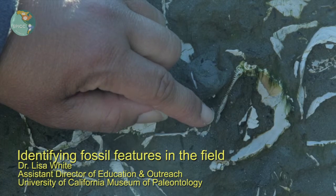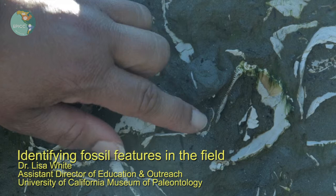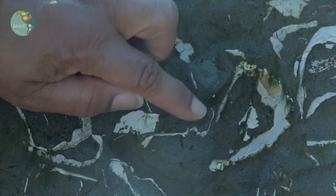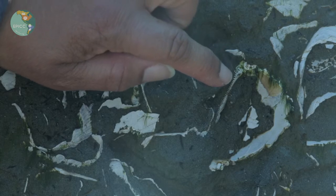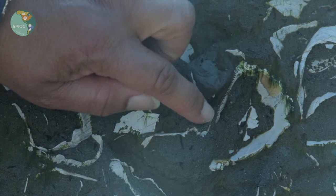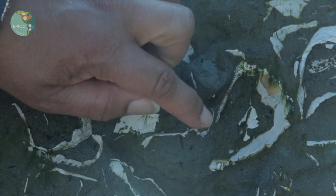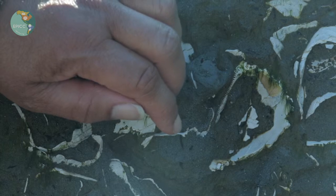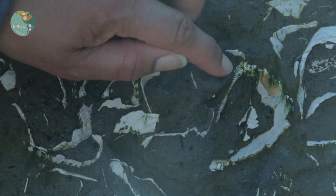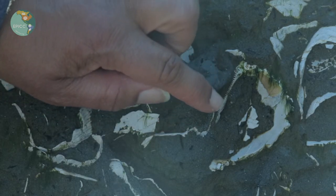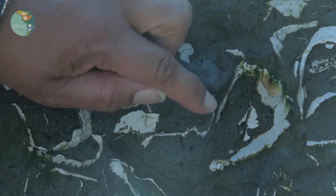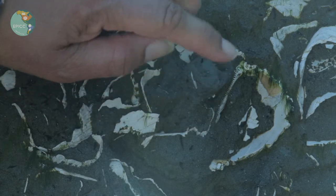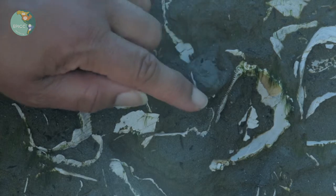One of the ways in which we describe clam shells involves their teeth. Just like we have teeth, clams have segmented parts along one edge of the shell that are places where the shell partly fits together. There's a straight line of dentition, or short segments, that reflect what we call dentition, or teeth.